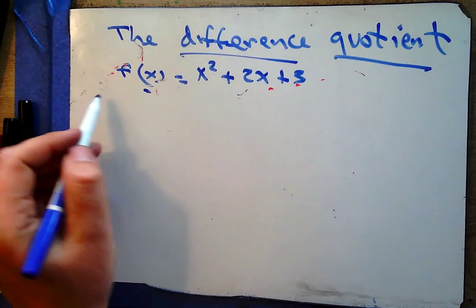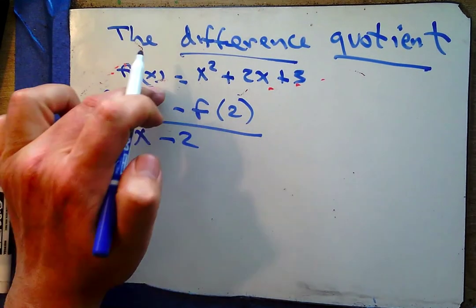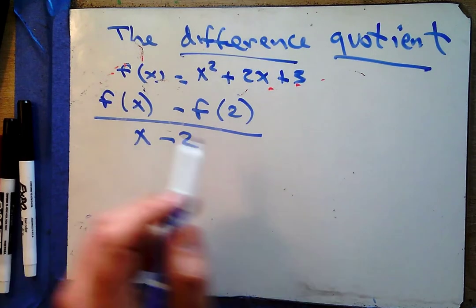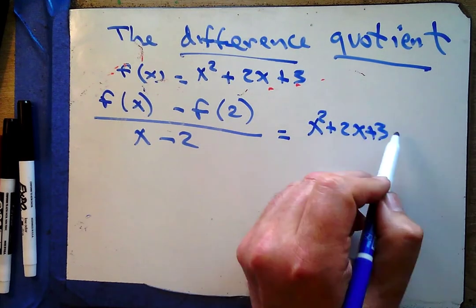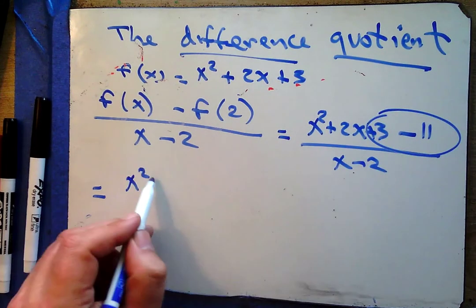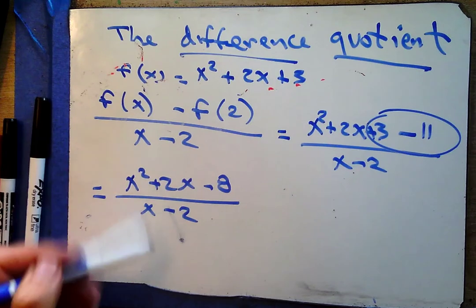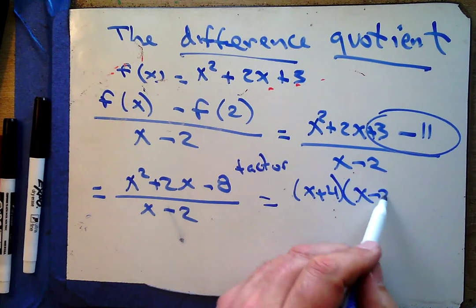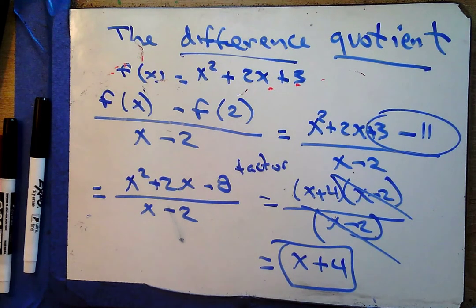Here's a third form of the difference quotient: [f(x) − f(2)] / (x − 2). Same general recipe: find f(x), find f(2), subtract them, divide. We found f(2) = 11, and f(x) = x² + 2x + 3, so we have (x² + 2x + 3 − 11) / (x − 2) = (x² + 2x − 8) / (x − 2). Don't cancel those — factor the top instead: (x+4)(x−2) / (x−2). Cancel, and we end up with x + 4. That's our answer.